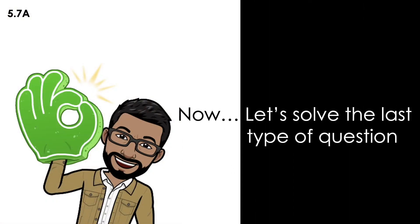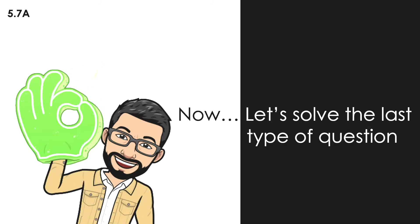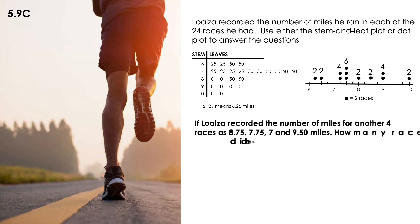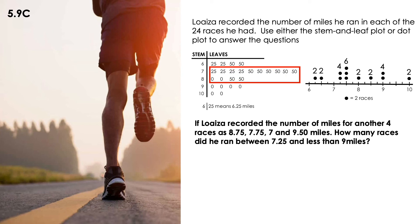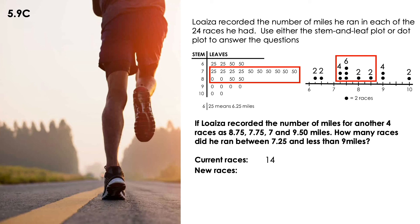Now let's solve the last type of question. If Loaiza recorded the number of miles for another 4 races as 8.75, 7.75, 7.9, and 9.50 miles, how many races did he run between 7.25 and less than 9 miles? I already have 14 races in that range. From the new races, I include 8.75 and 7.75, because 7.9 and 9.50 are not inside that frame. Adding those two gives me 16 races total.